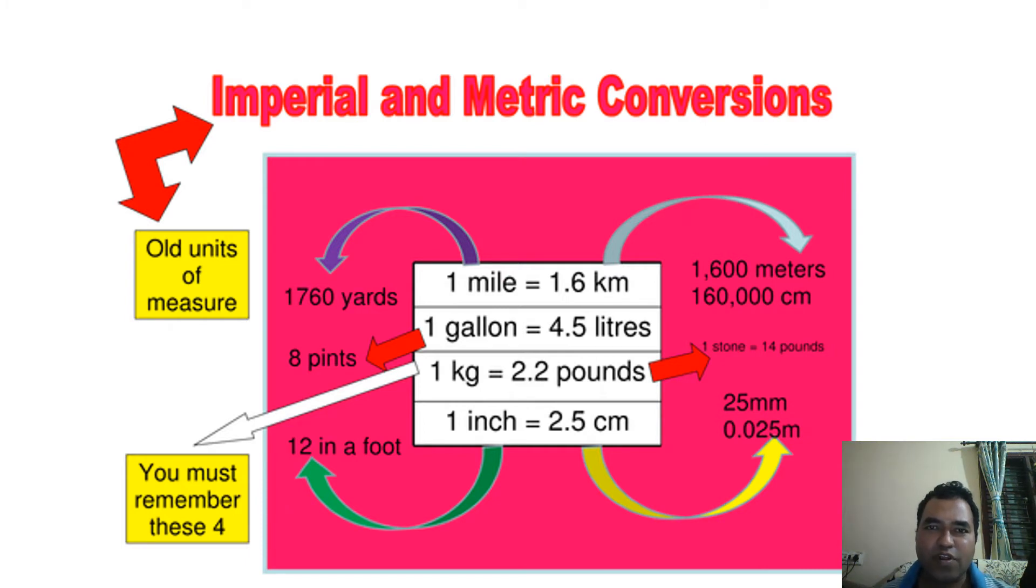Here is a small conversion table for you. I have taken four imperial and four equivalent metric units. The first one is distance. As you know, in USA the distance is always told in miles while in countries such as United Kingdom, India, Australia and Canada we tell the distance in kilometers. The conversion is 1 mile equals 1.6 kilometers.